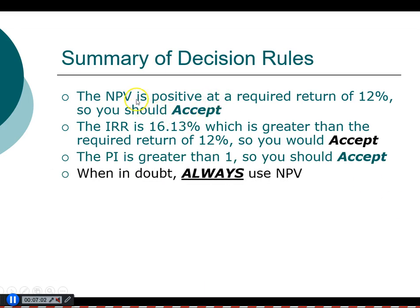However, that's not always the case. If you come across a project where one rule leads to an acceptance decision and another leads to a rejection decision, then you should always go back to the profitability index rule.